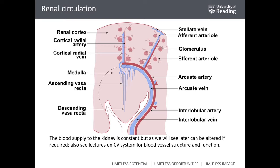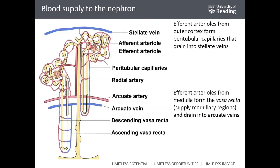If the blood circulation in the kidney is altered — for example, because of drugs or a disease that can lead to kidney toxicity — that is a problem. The blood supply to the nephron is characterized by afferent and efferent arterioles, important for the filtration process itself. The efferent arterioles from the medulla form the vasa recta, which supply the medullary regions with blood and drain into the peritubular capillaries.